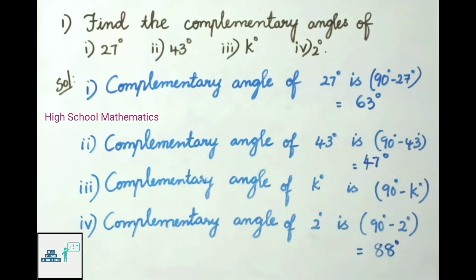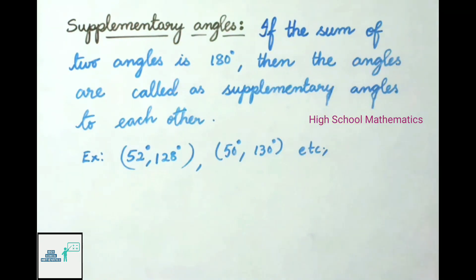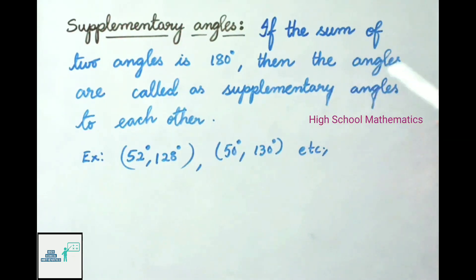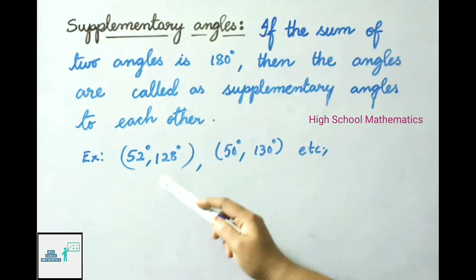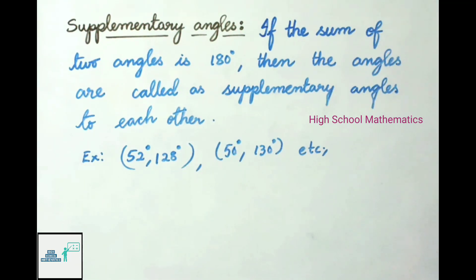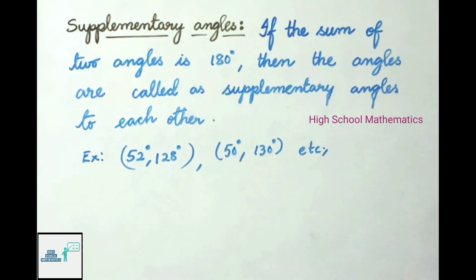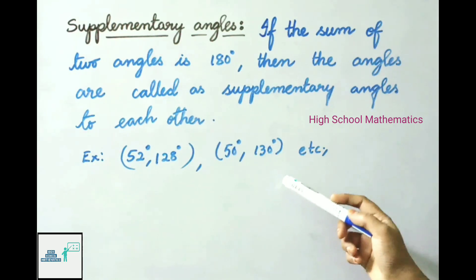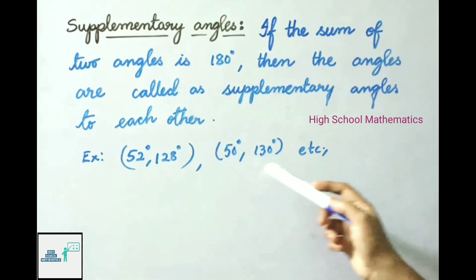Therefore the complementary angle of 2 degrees is 88 degrees. Now let us see what are supplementary angles. If the sum of two angles is 180 degrees, then the angles are called supplementary angles to each other.